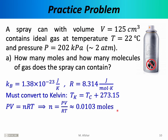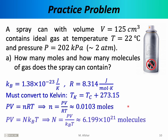To find the number of molecules, we can simply take this number and multiply it by Avogadro's number, or we can use the ideal gas law in its other form PV = Nk_BT, where capital N is the number of molecules. Rearranging this equation, the number of molecules equals PV divided by the Boltzmann constant times the temperature. Plugging in all the numbers after converting to SI units, we find that there are 6.199 × 10²¹ molecules in this container.